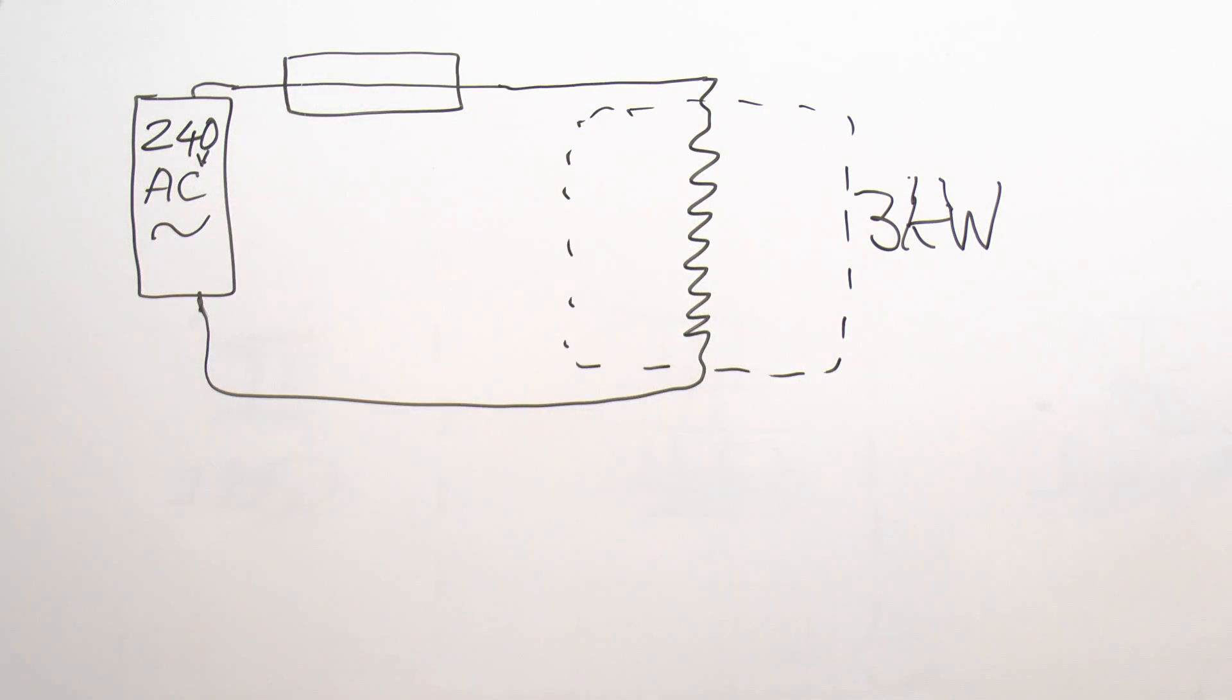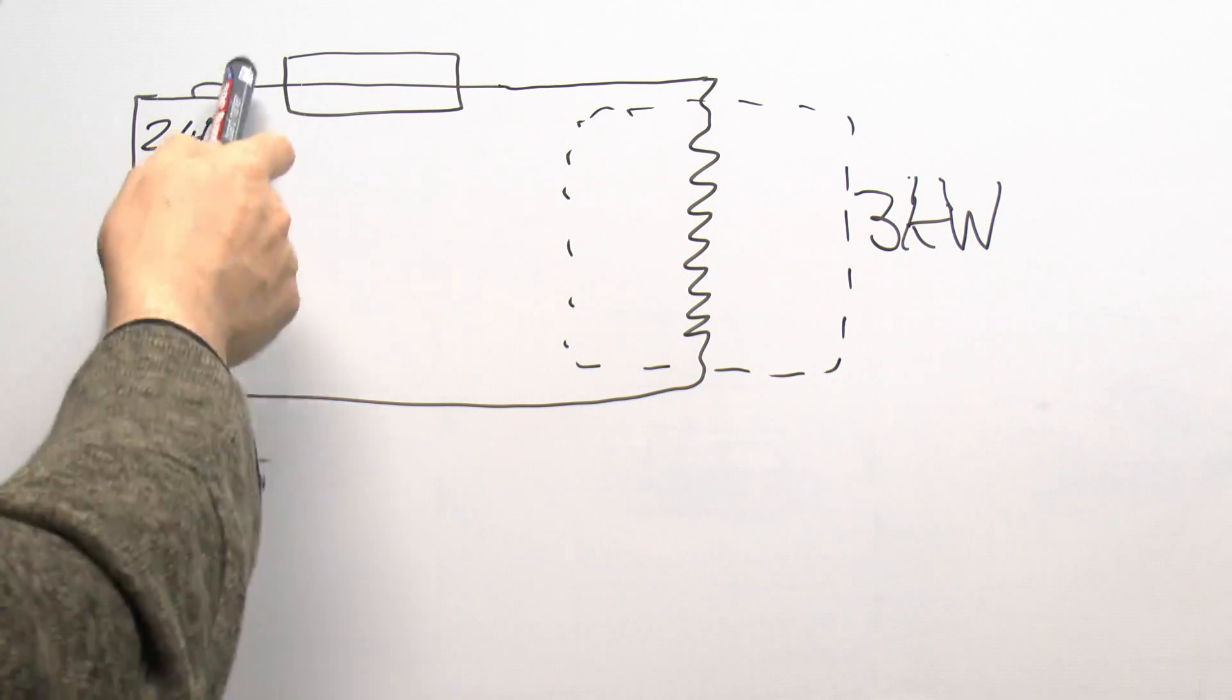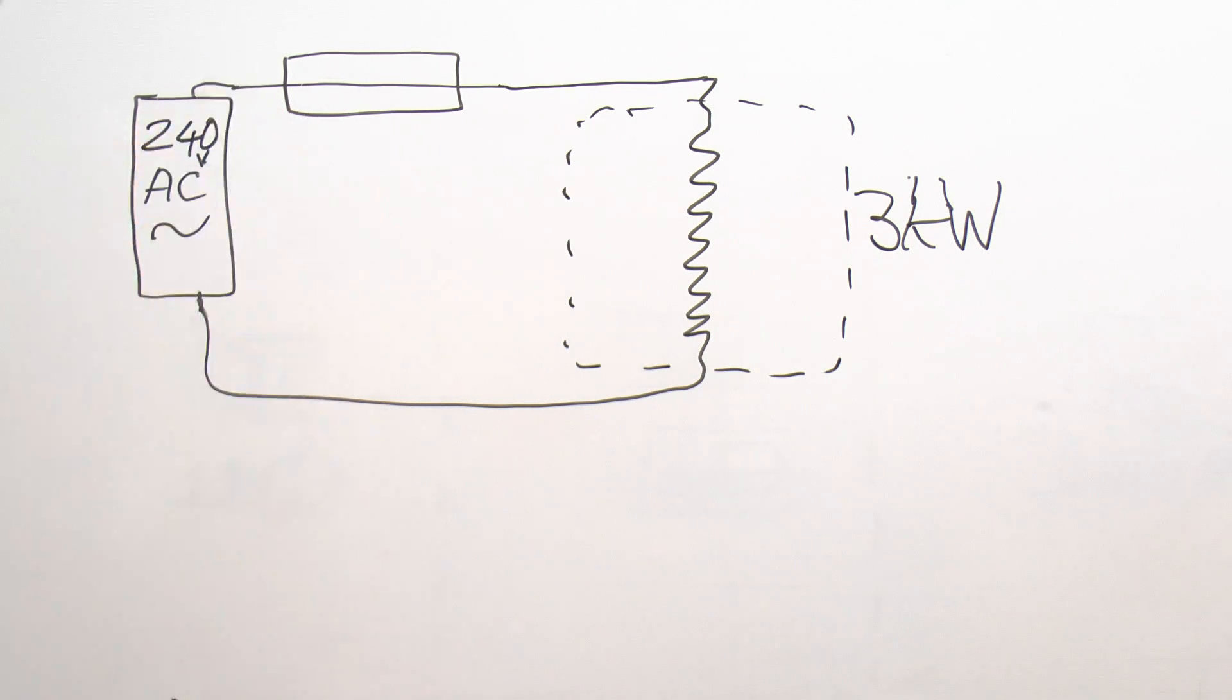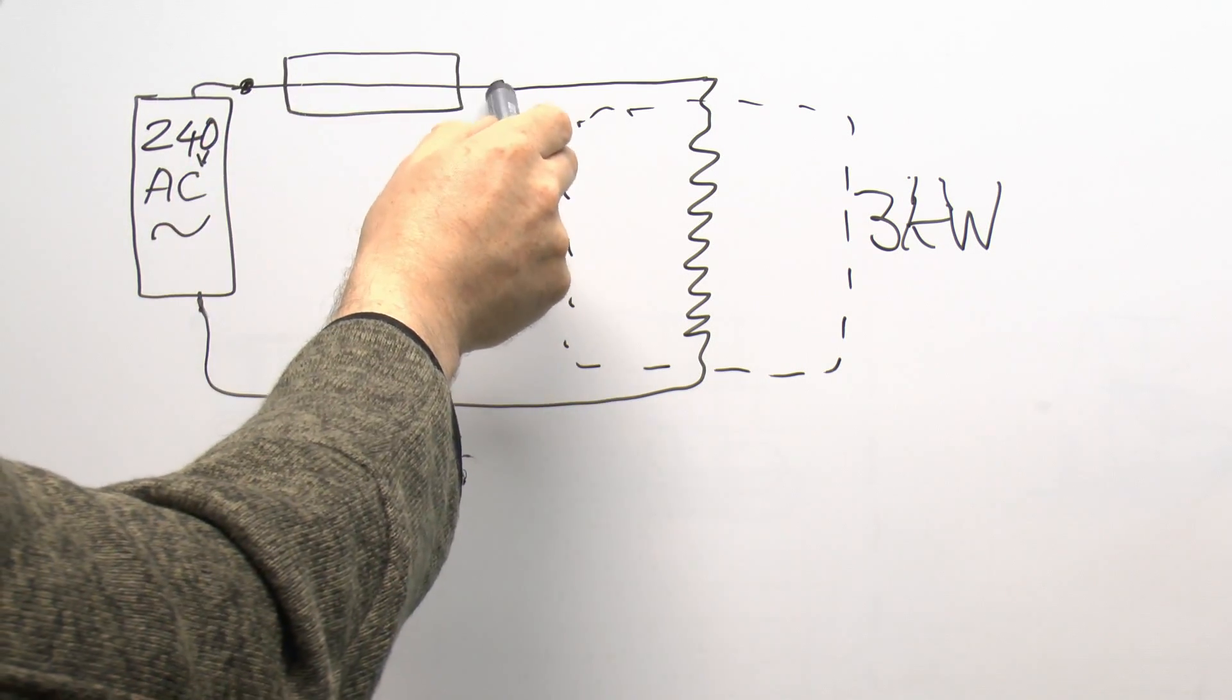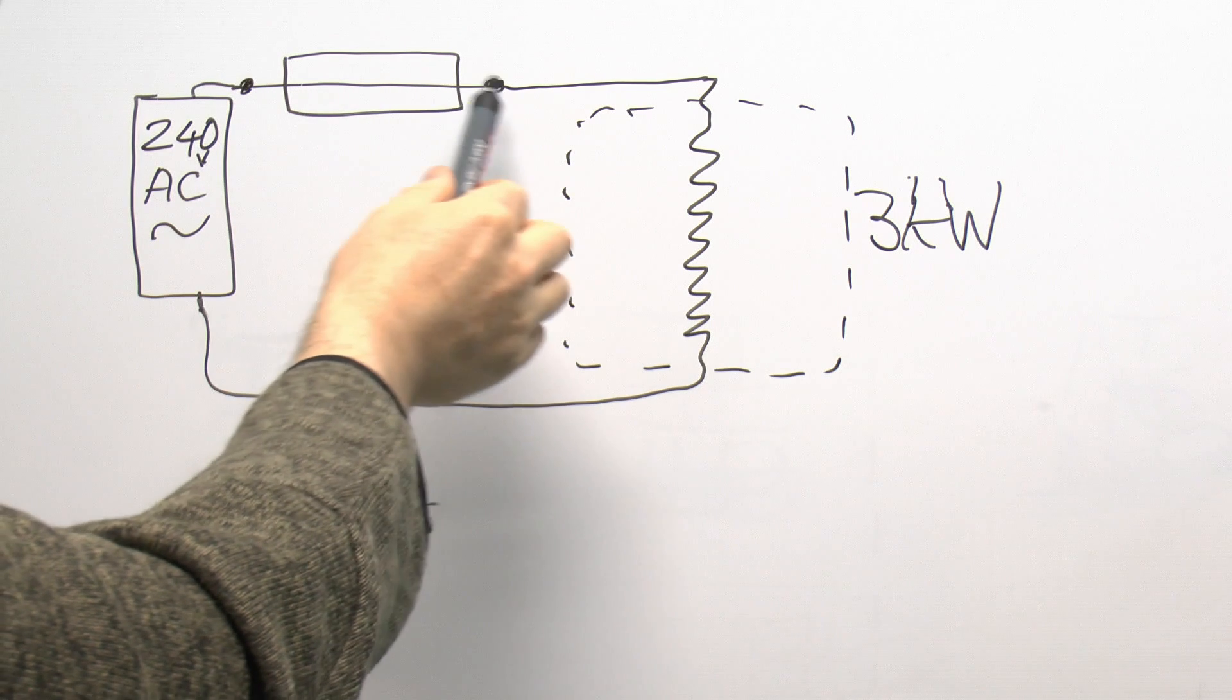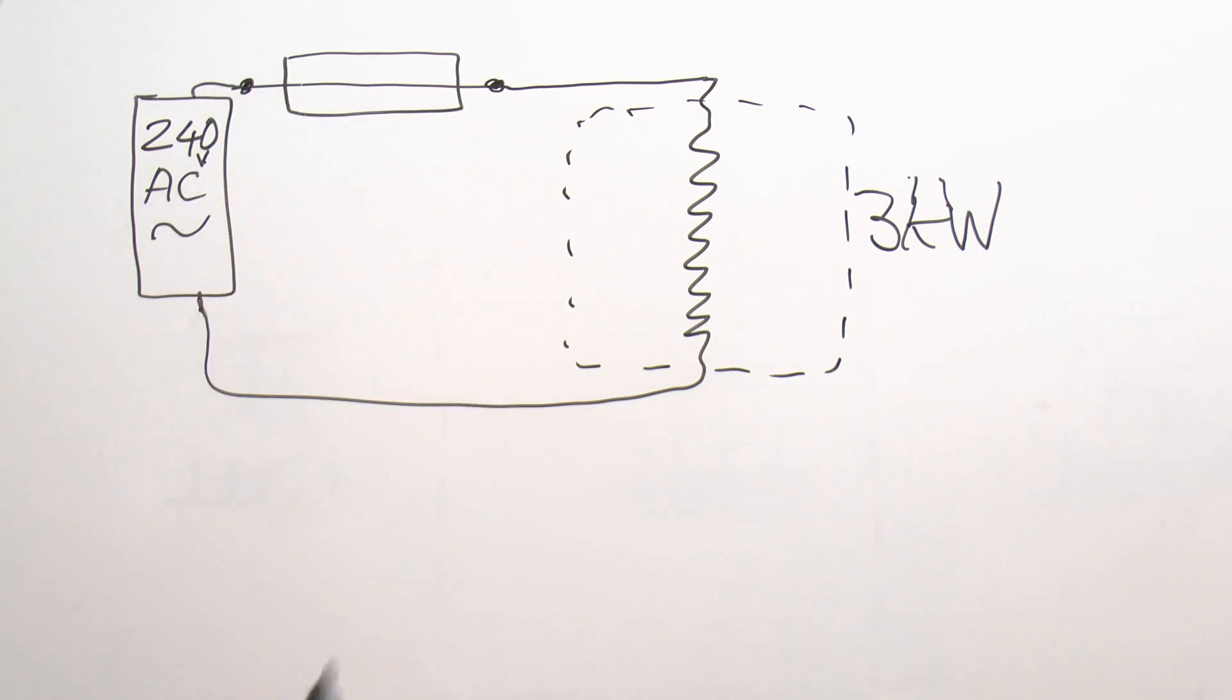Although obviously most of the energy would be wasted in the electric heater over there, and although you've got 240 volts between these two points, you don't have 240 volts between here and here. In this circumstance the voltage here is going to be extremely small, only in the order of one volt or less.